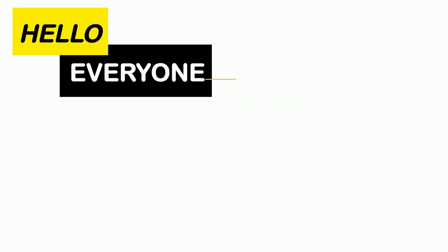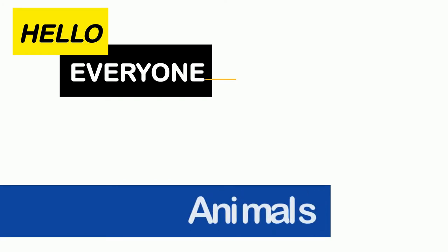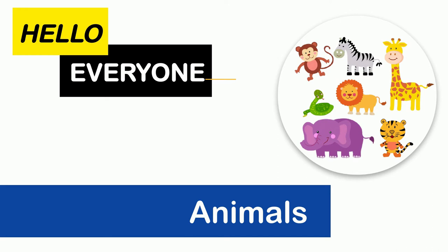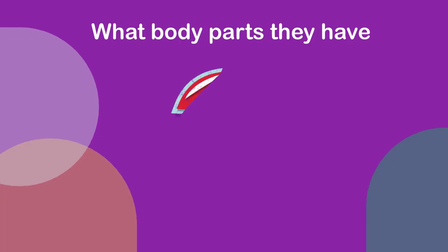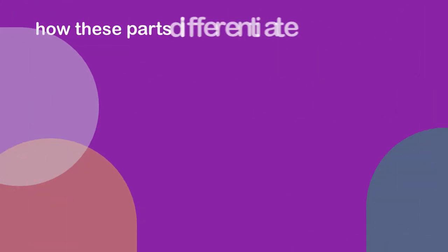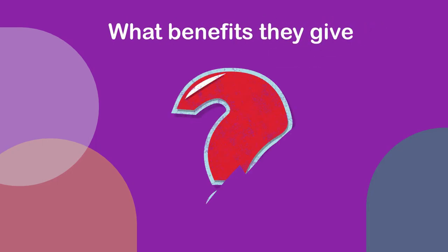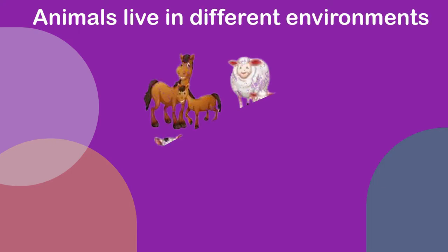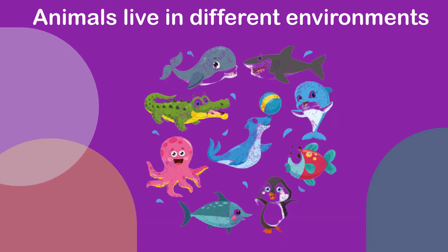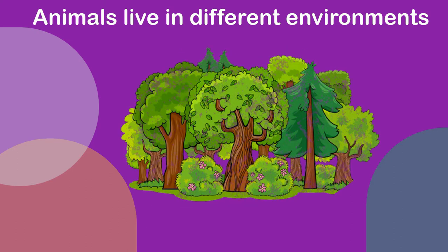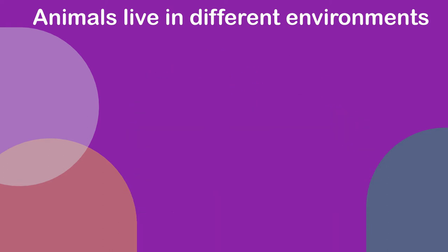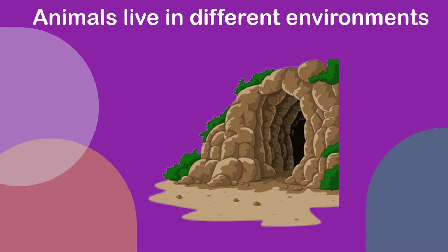Hello everyone! Today's topic is about animals. We will be learning about some further details of animals, such as what body parts they have, how these parts differentiate between animals, and what benefits they give. As you have learned in previous grades, animals live in different environments. Some live on land, some in the water, some in forests, on trees, some in caves, and some underground.